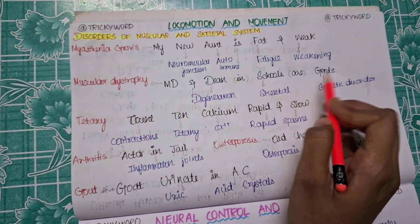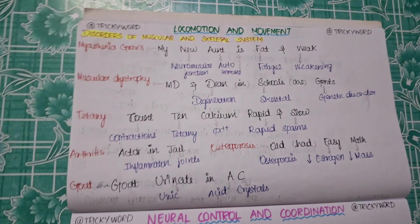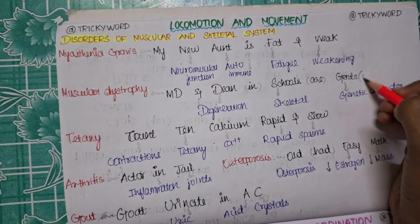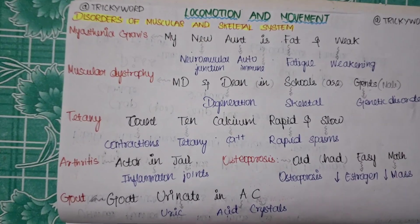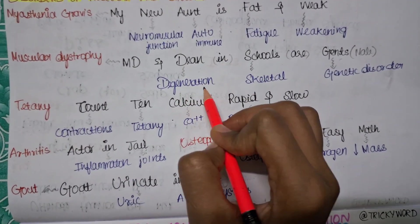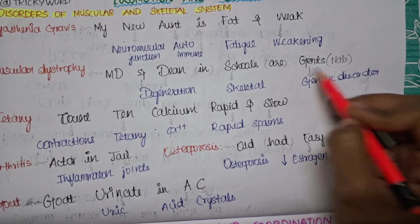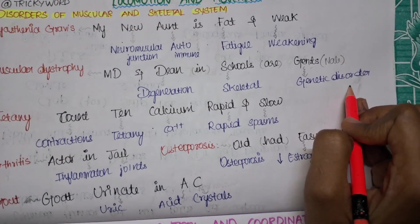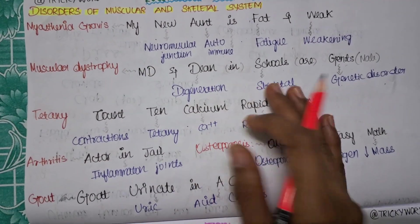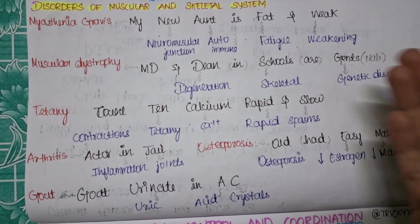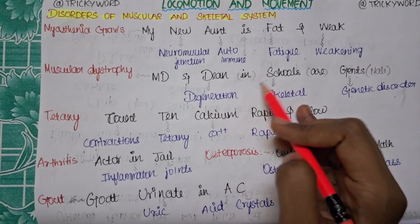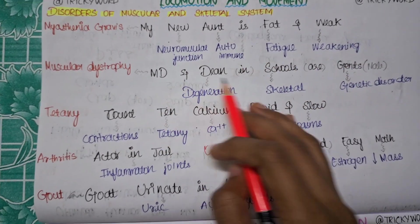Now muscular dystrophy: MD and dean in schools are gents. Your statement is given that in MD, dean in schools are gents. They are usually gents, it's nothing but your male. MD is for disease and dean is for degeneration, school is for skeletal, gents is for genetic disorder. So this disease deals with the degeneration of the skeletal bones and these are usually known as a genetic disorder only. The things which I have mentioned in the bracket have no play in this trick.